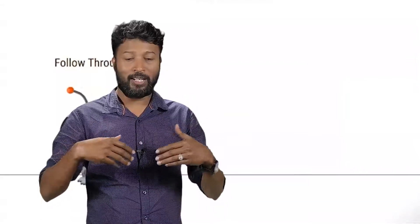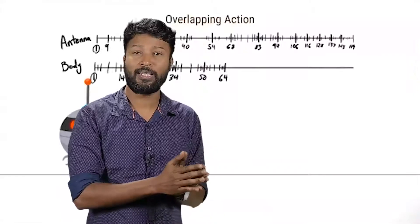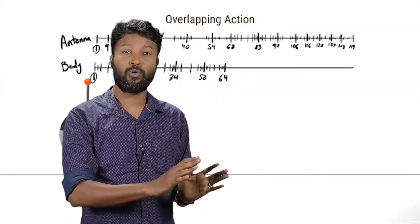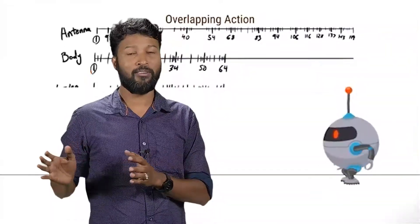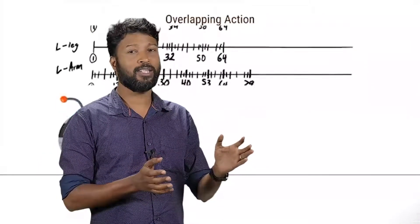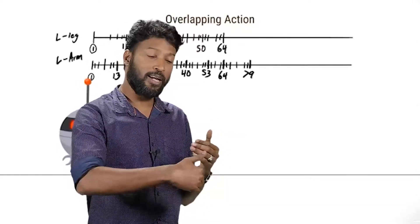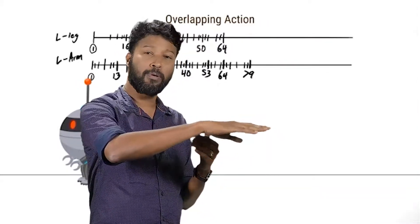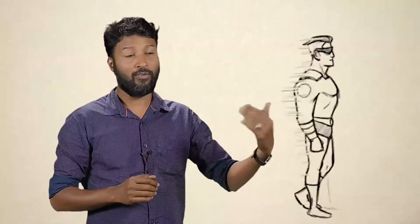At the same time, when we go to the character and run, the pose is at the same time. But when we look at the follow-through, we will overlap a little bit. Now we are going to overlap. This principle is follow-through and overlapping.